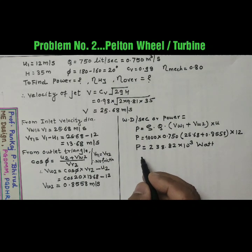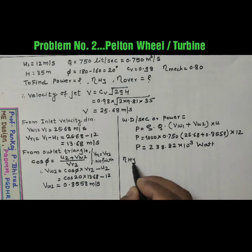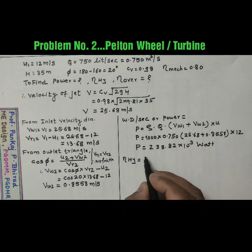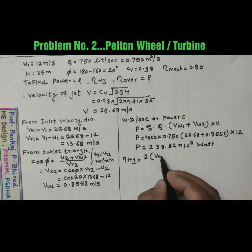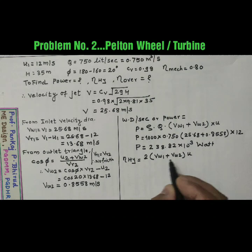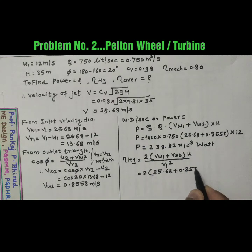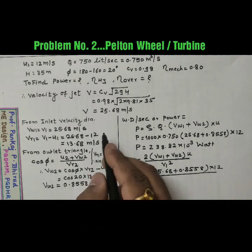Now second parameter that is hydraulic efficiency. So hydraulic efficiency equal to, we have formula 2 into Vw1 plus Vw2 into U upon V1 square. So by putting the values 2 into 25.68 plus 0.8558 into 12 upon V1 square that is 25.68 square.